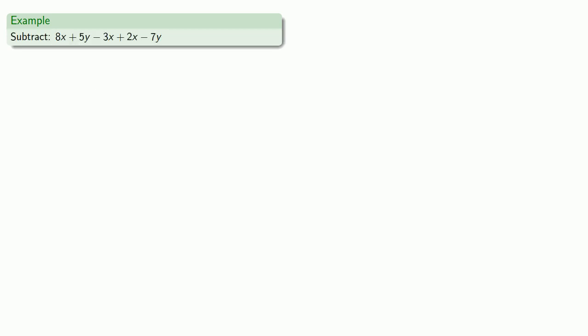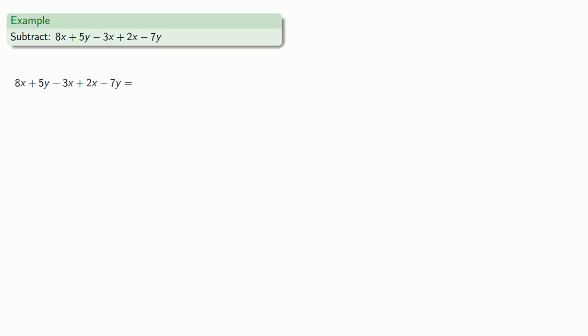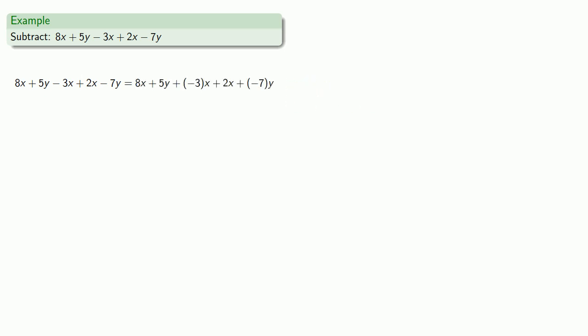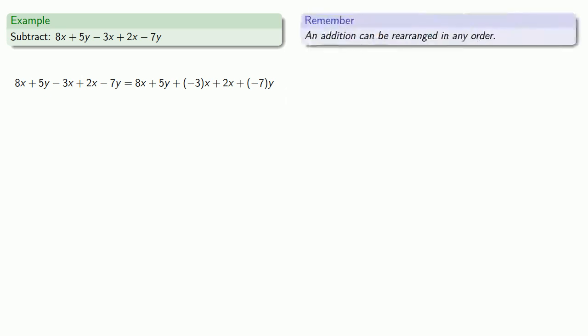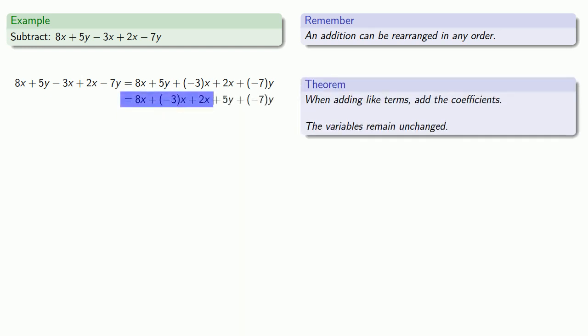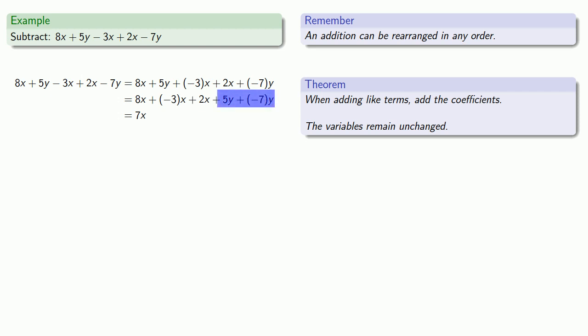Let's take an expression like 8x plus 5y minus 3x plus 2x minus 7y. Because I have the subtractions — minus 3x and minus 7y — I'll first rewrite this as an addition of the additive inverse. The reason this is useful is that once it's an addition, I can rearrange the terms in any order I want. I'll put like terms close to each other for convenience. Now I can add like terms by adding the coefficients: 8x plus additive inverse of 3x plus 2x gives 7x, and 5y plus additive inverse of 7y gives additive inverse of 2y.